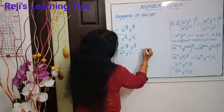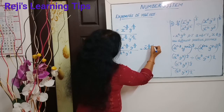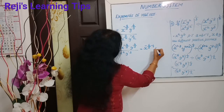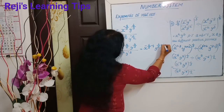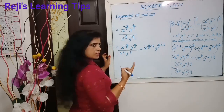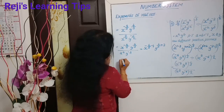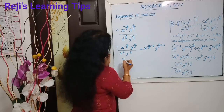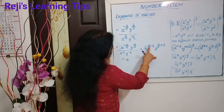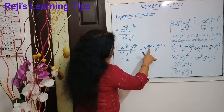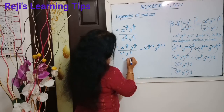So x raised to minus 4 by 3 minus 4, y raised to 4 by 3. Minus of minus means that is plus. Then we can write here x raised to — taking LCM — minus 4 minus 12 divided by 3, that is minus 16 by 3.